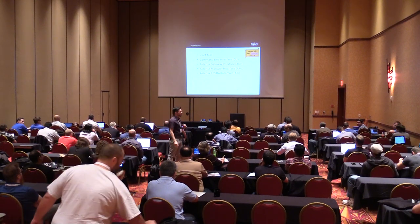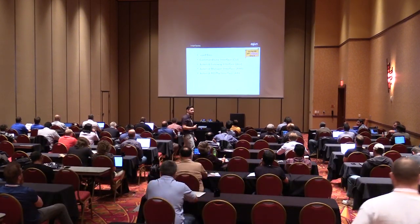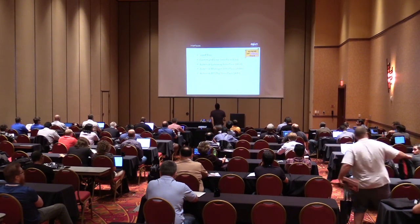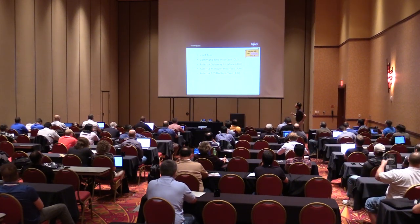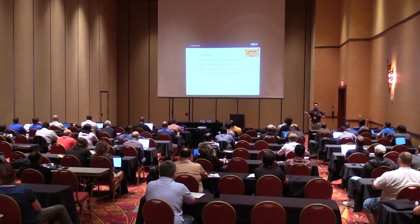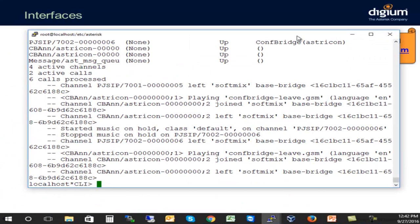How can you configure Asterisk and interact with it? There are different ways: configuration files in /etc/asterisk — that's what we're covering today. You can also use the CLI, the command line interface, where you can add or remove members from a queue and do a lot of other configuration tasks. But there are other ways to interact with Asterisk as well.